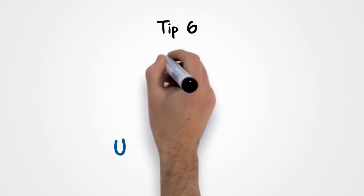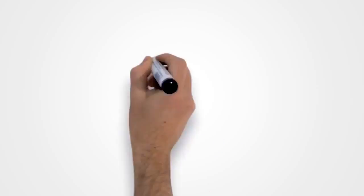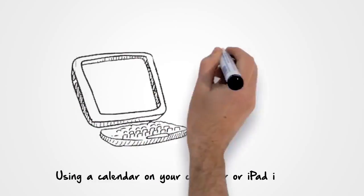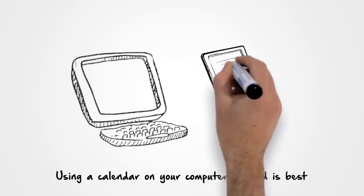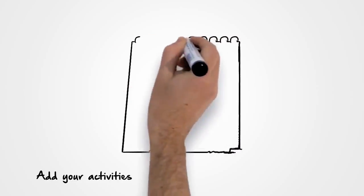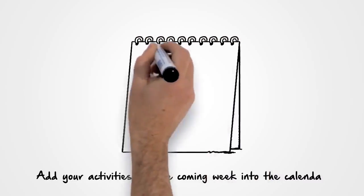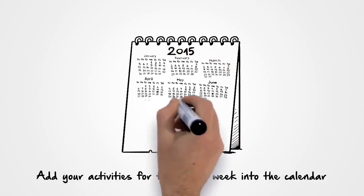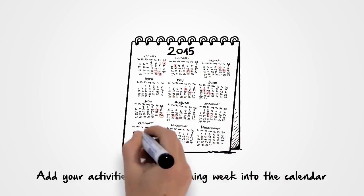Tip six: Use a schedule. Using a calendar on your computer or iPad is best so that you can make adjustments while you're planning. Add your activities for the coming week into the calendar and schedule in any reoccurring appointments to save time.